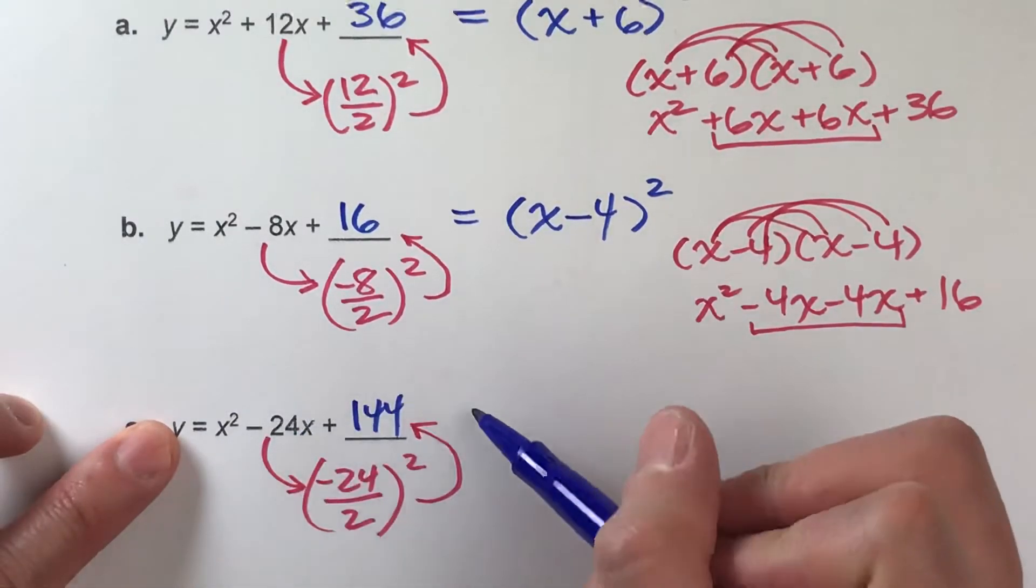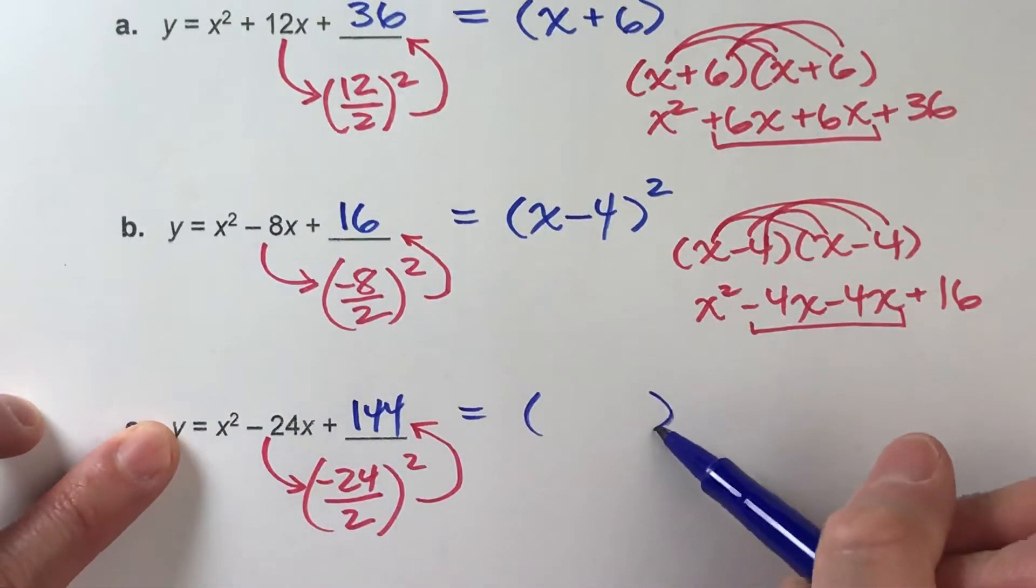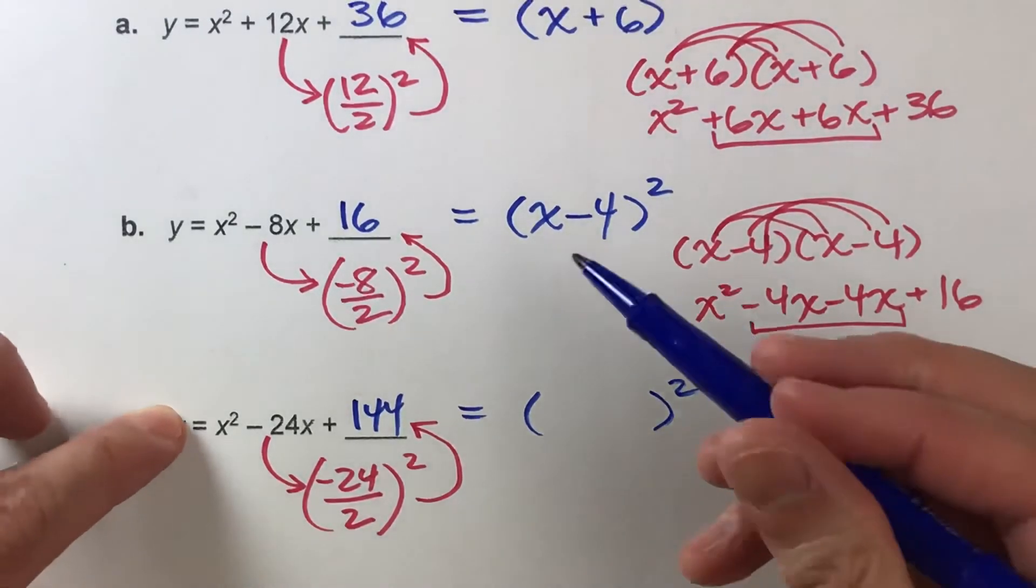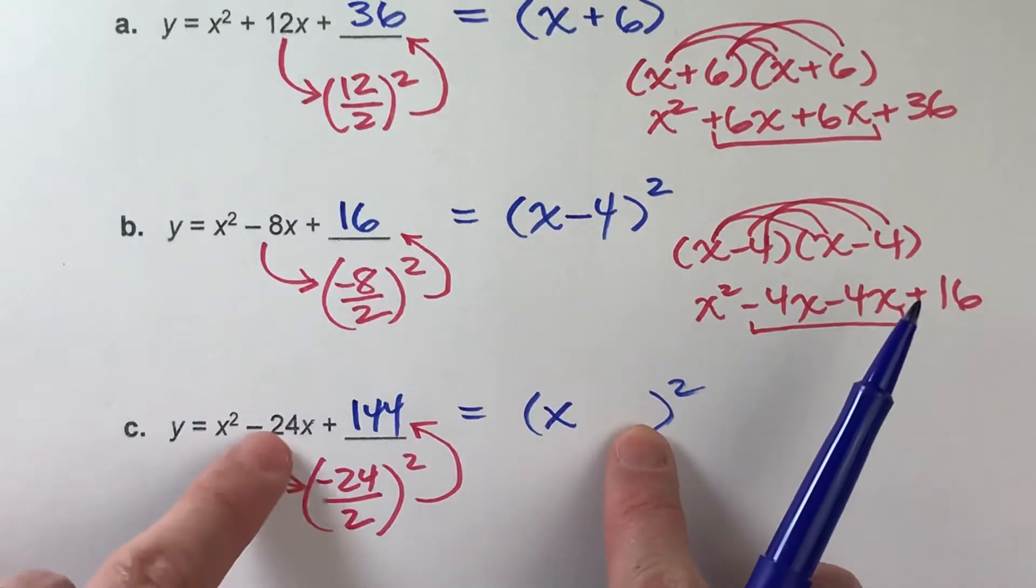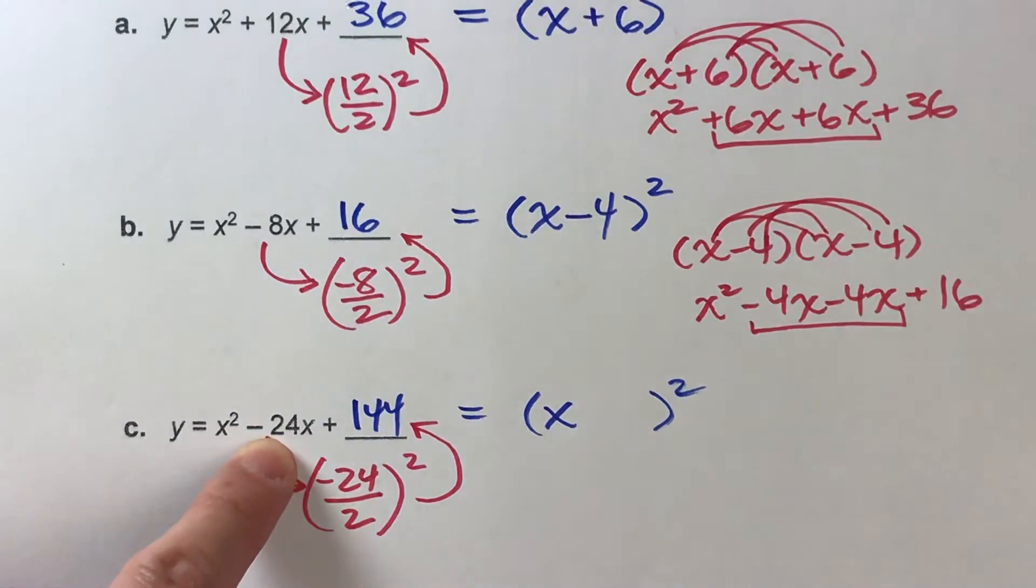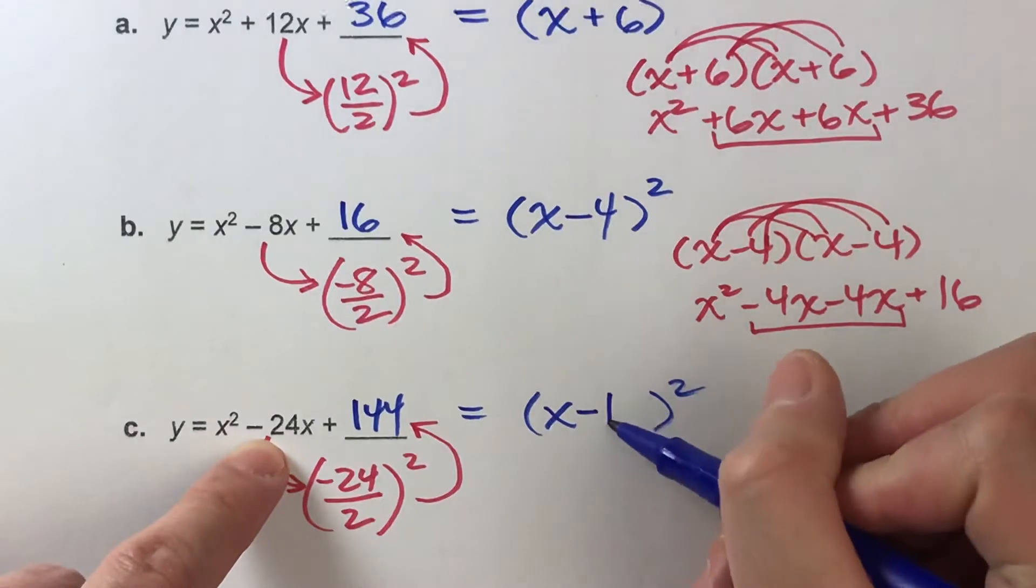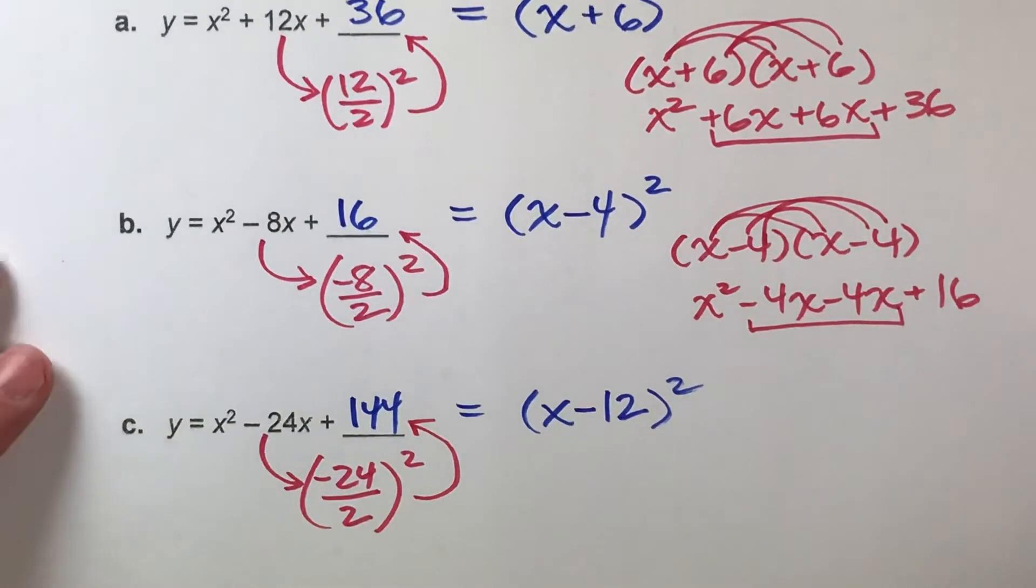So this should be a perfect square. So we should be able to write it like this. Well, how do we know what goes in here? Well, we know it's always an x. Now, the other number, we either take negative 24 and divide it by 2, which is negative 12. Or the square root of 144, which could also be negative 12. So there we go, minus 12, x minus 12.